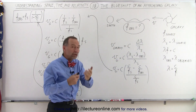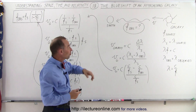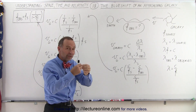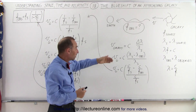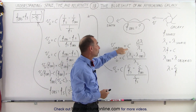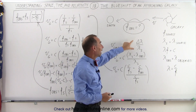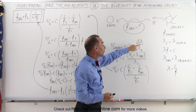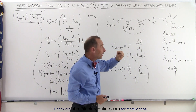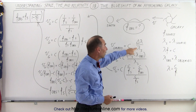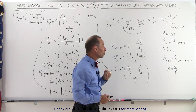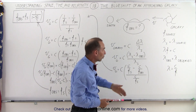We have an equation used in astronomy that tells us that the velocity of an approaching object like a galaxy is equal to the speed of light times the ratio of the change in the wavelength that we observe, divided by the wavelength of the original source.